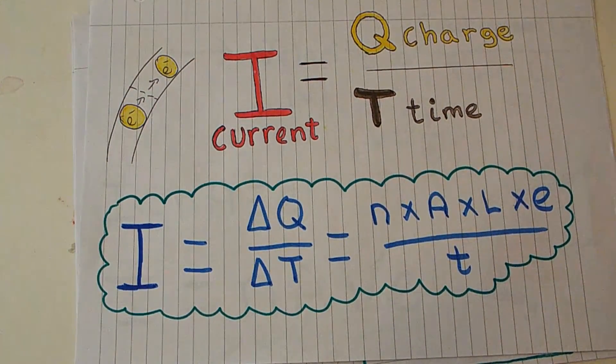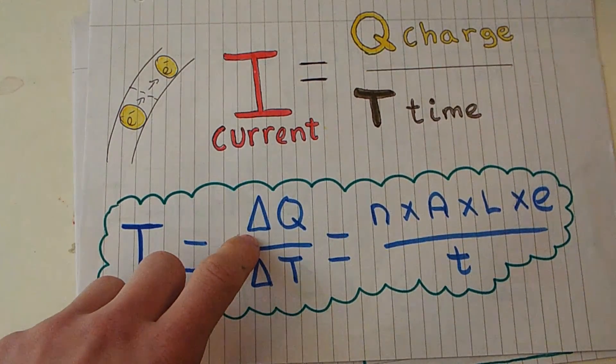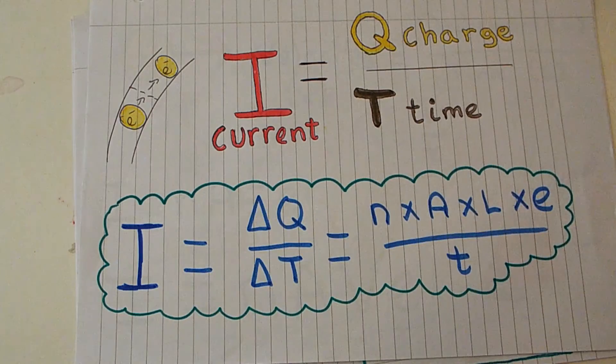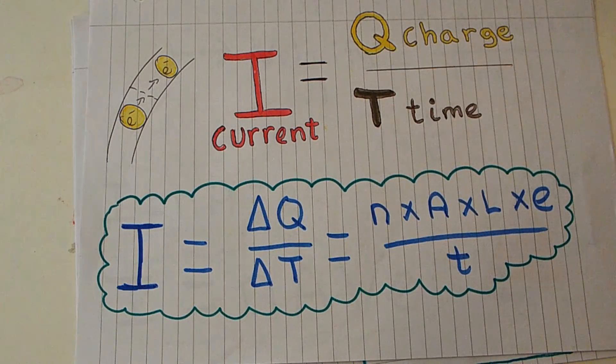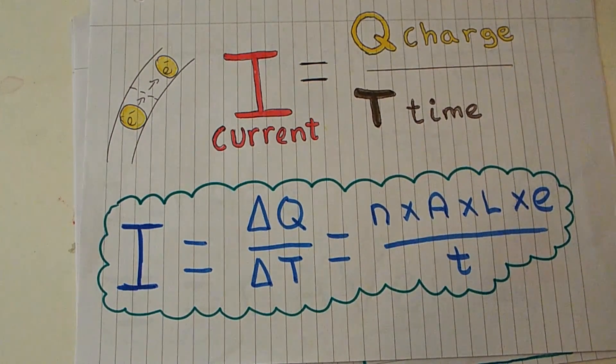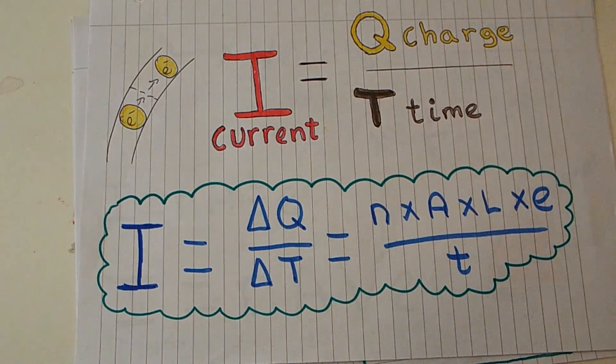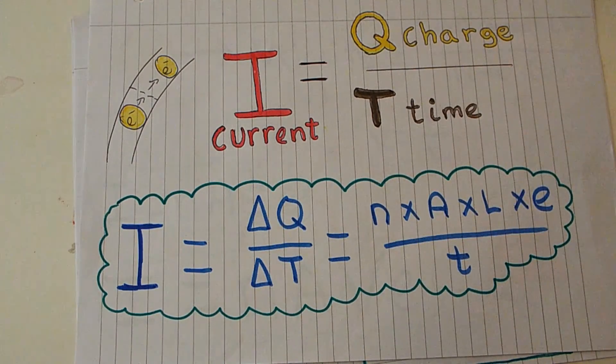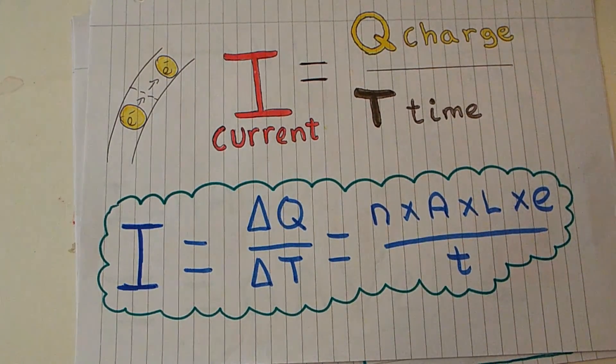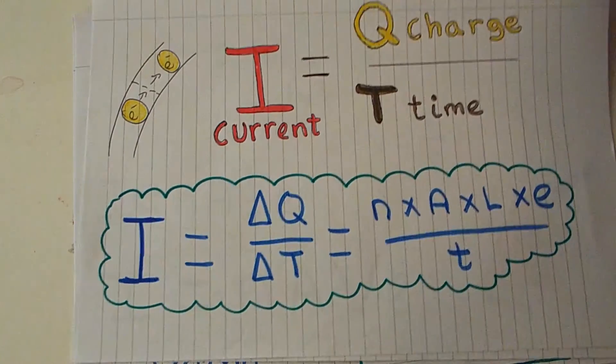For our next step we're going to be looking at current. Current is equal to change in charge over change in time. So for our current we just want to divide charge, which we said was nAeL, over t. So we've got nAeL over t which is equal to our current.